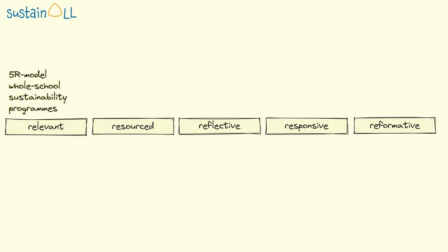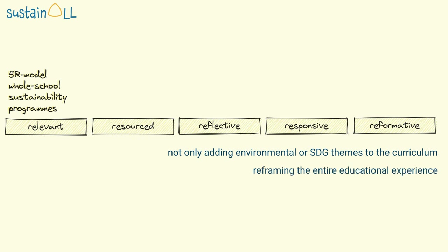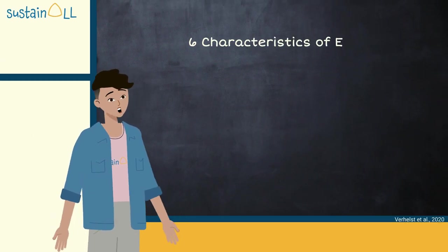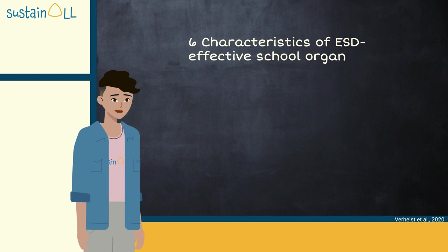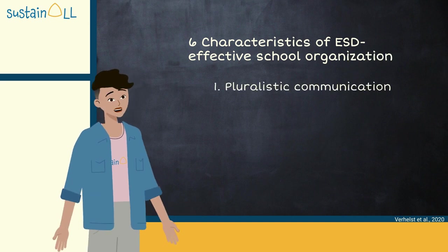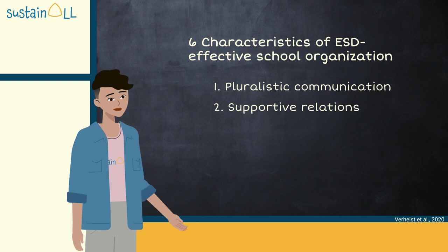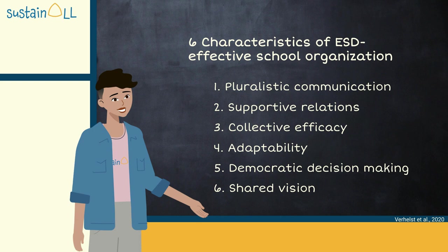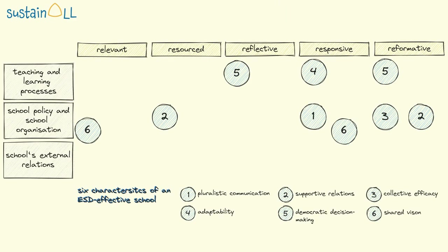They appreciated that the agenda is not simply one of adding on environmental or SDG themes to the curriculum, but of reframing the entire educational experience. The third model is the conceptual framework for an ESD-effective school organization, with its six characteristics: pluralistic communication, supportive relations, collective efficacy, adaptability, democratic decision-making, and a shared vision. Here you can see how these characteristics interrelate with the other two frameworks. Please pause the video and take a moment to understand the model.